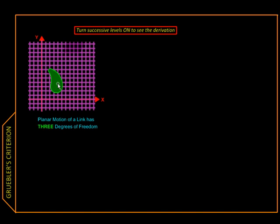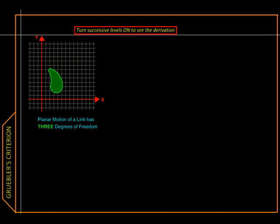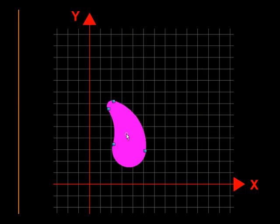Here is a link in the XY plane. You can imagine this to be something like a book placed on a table. There are only three things this body can do: it can translate along X, translate along Y, or rotate about the Z axis.